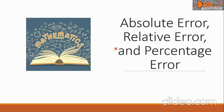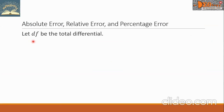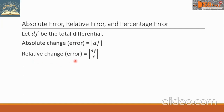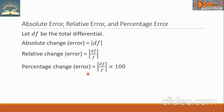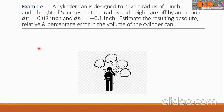Today we're going to study Absolute Error, Relative Error, and Percentage Error. Let df be the total differential. The absolute change or error equals the absolute value of df. The relative change or error equals the absolute value of df over f. The percentage change or error equals the absolute value of df over f, multiplied by 100.